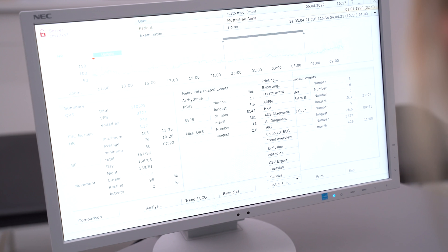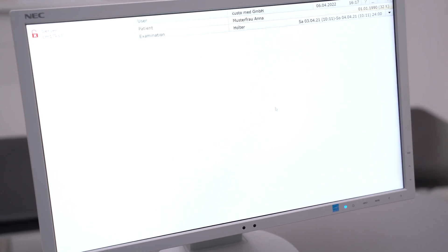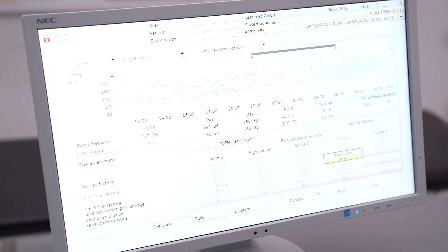Download the data from the devices via base and infrared interface. Under options, you can switch from halter ECG to ambulatory blood pressure monitoring.